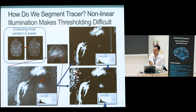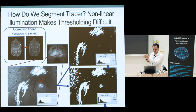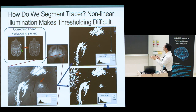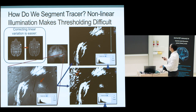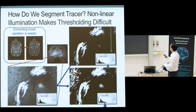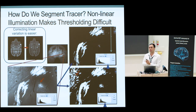The next problem is how to segment out the tracer signal. The images from the NanoZoomer slide scanner are not stable — intensity varies and there's non-linear illumination distortion. Removing linear variation is not too difficult, but as an example of non-linear low-frequency intensity distortions: if you look at this coronal section with strong tracer, thresholding at a set value isolates the strong signal. But to also capture weak signal, you reduce the threshold level and simultaneously pick up background fluorescence.